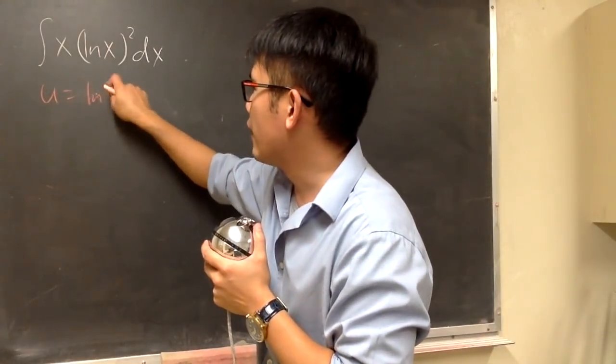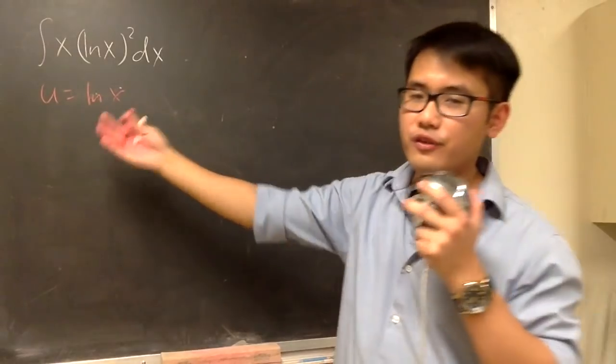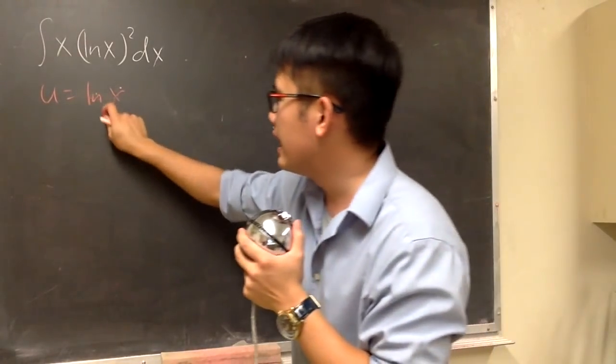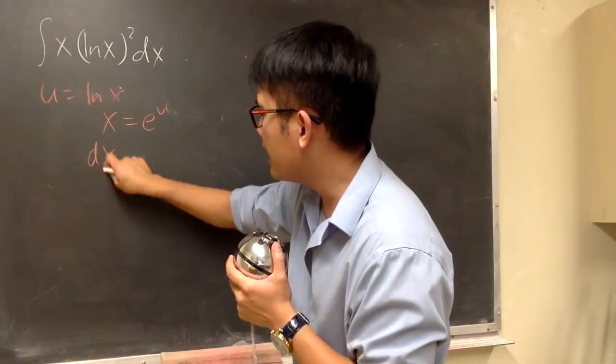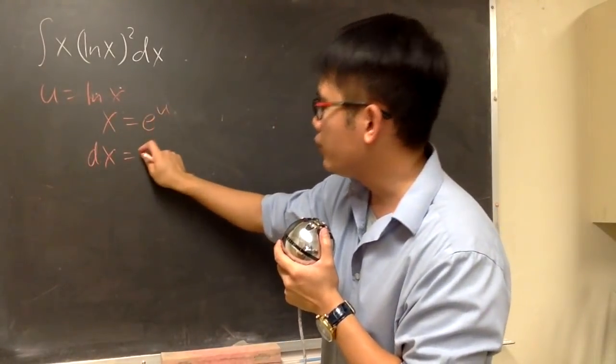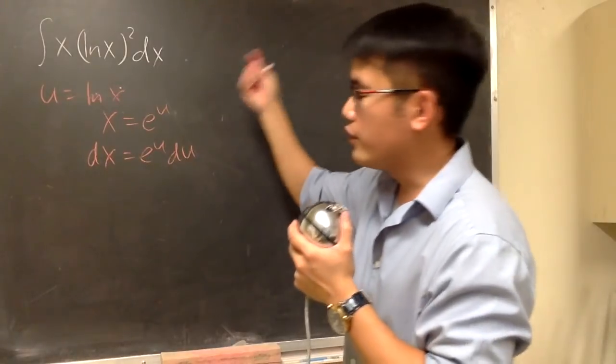Then u is equal to the inside which is ln x. And I'm not going to look at this and differentiate both sides because I want to look at this as x is equal to e to the u and then differentiate both sides. Because this way I can get dx equals to the derivative of e to the u is e to the u du, right?